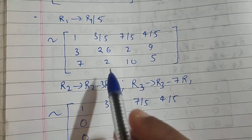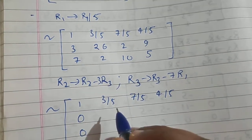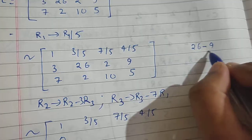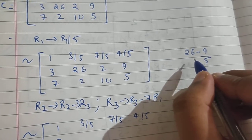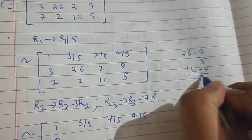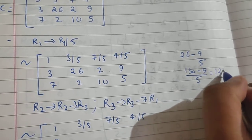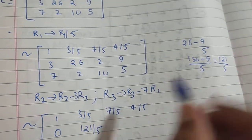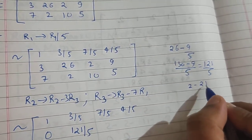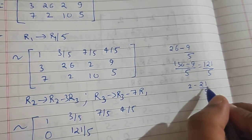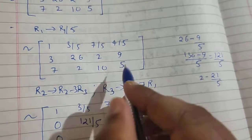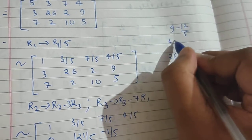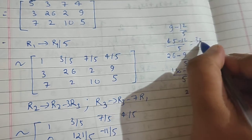For R2: multiply 3/5 by 3 to get 9/5. So 26 minus 9/5 = (130 minus 9)/5 = 121/5. Then 2 minus 21/5 = (10 minus 21)/5 = minus 11/5. And 9 minus 12/5 = (45 minus 12)/5 = 33/5.